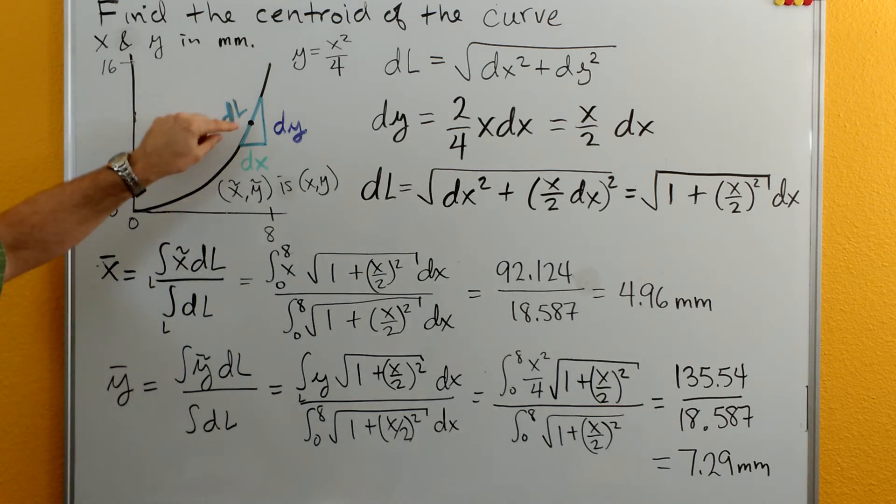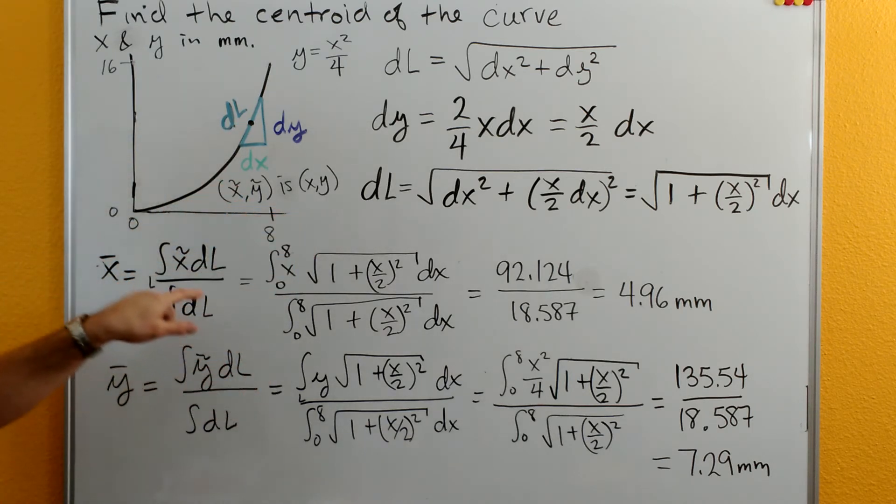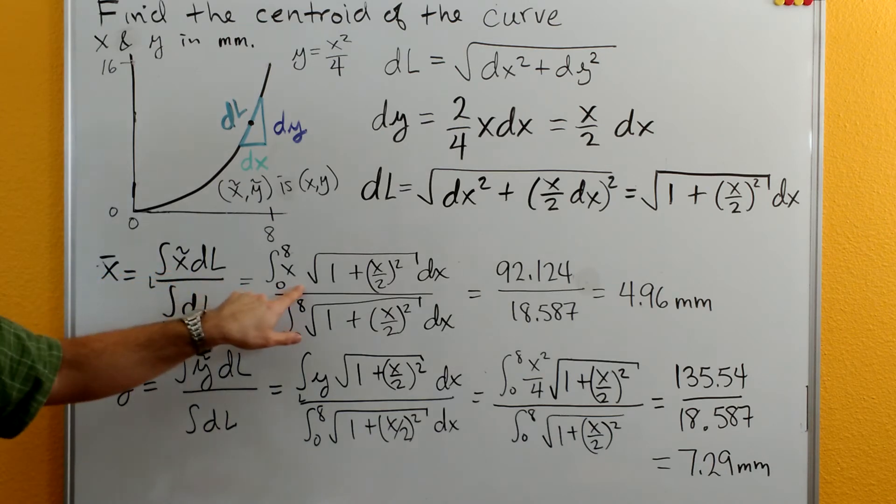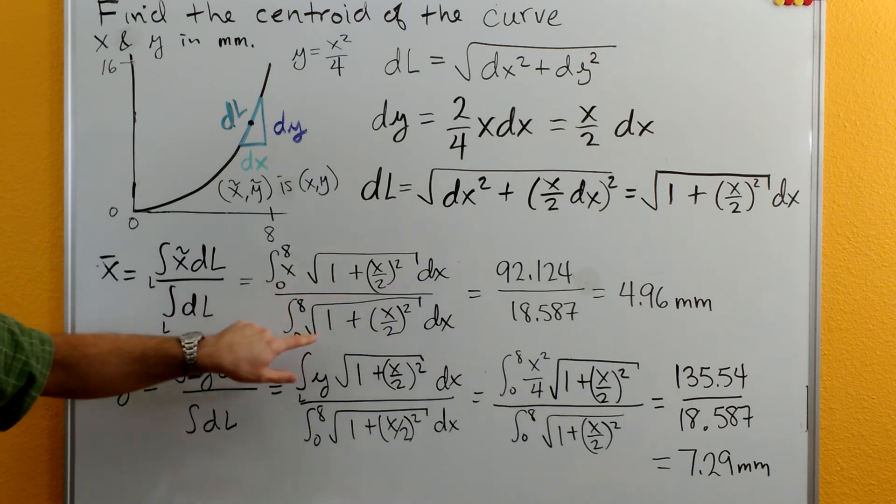Looking at the centroid of our differential length it's going to be just right there on the curve and so our x tilde y tilde is just going to be x y. This x tilde just becomes an x. We've already got this expression plug it in here. We've got this expression plug it in here.